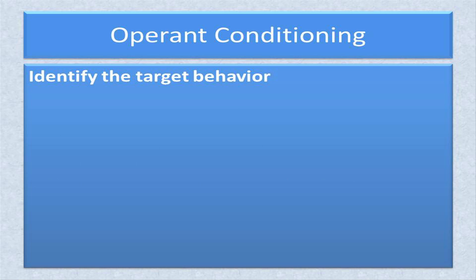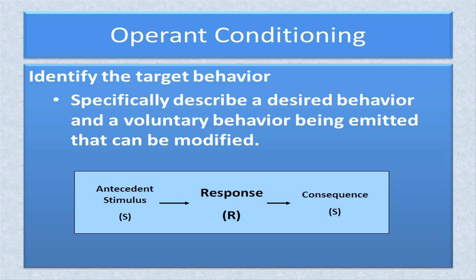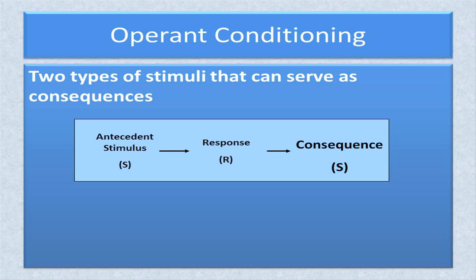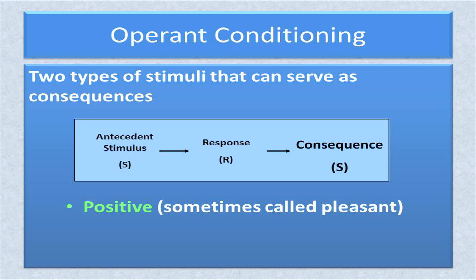The first step in using operant conditioning is to identify a target behavior as well as a behavior that the organism is already emitting that can be modified. For example, if a teacher wants a student to raise his hand before speaking, any movement of a hand would be the initial behavior modified into a hand-raising behavior. The next step is to identify possible consequences. There are two types: positive, sometimes referred to as pleasant, and negative, sometimes labeled aversive. It is not known exactly how any particular stimulus will be labeled after it is presented to the organism — it is simply a best guess at this point.